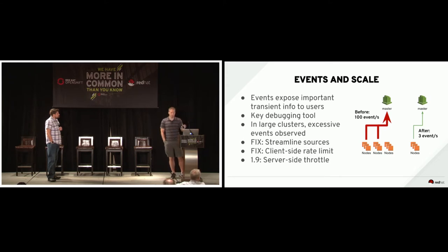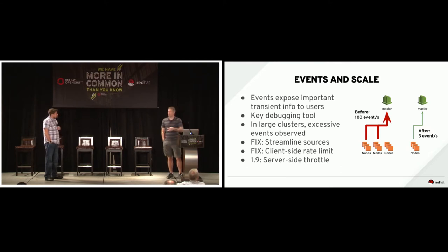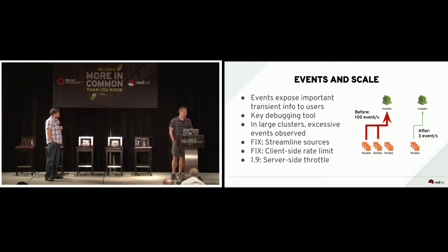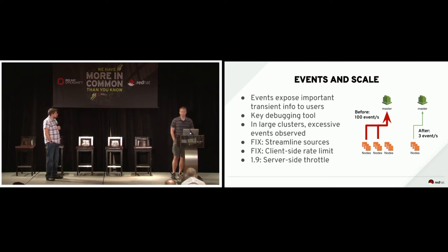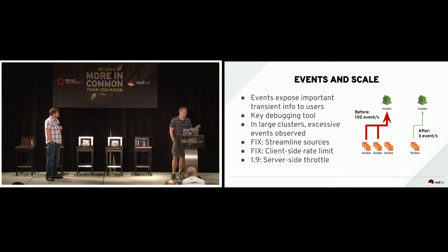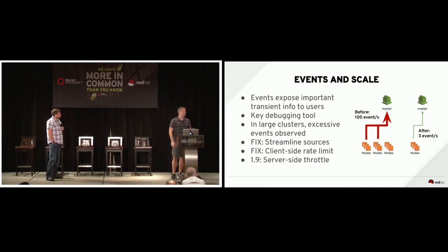Kubernetes relies on events to notify users about what's going on — crash loops, node detachments, failed builds. In some of the largest, densest environments, we realized that very unhealthy applications were clogging the pipes by sending too many events. As part of our experience with very large clusters in our online environments, we worked in the upstream Kubernetes community to refine this, putting a good pattern in place and collaborating with Google to set a long-term direction for events.